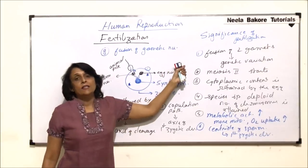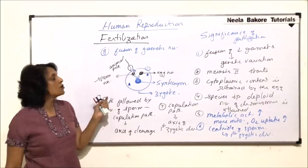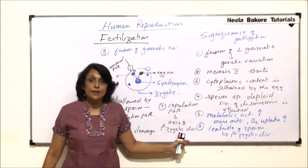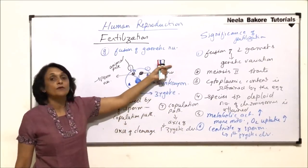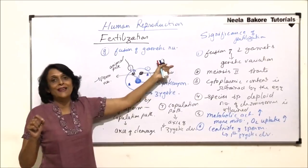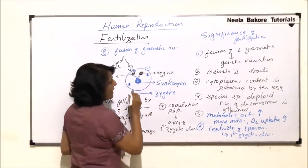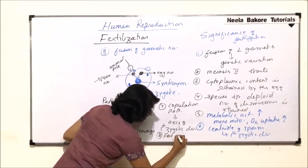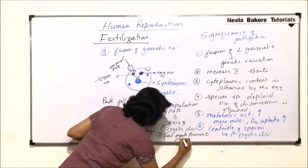So in short, we can say that fertilization helps in formation of zygote but there are so many important things. We have not written here that fertilization membrane which is formed as a result of this touching of the egg prevents polyspermy. So if we have to just add that eighth point, fertilization membrane prevents polyspermy.